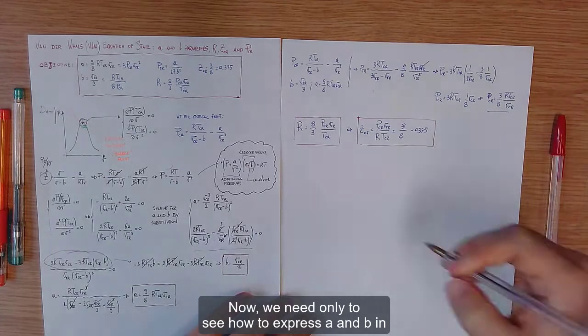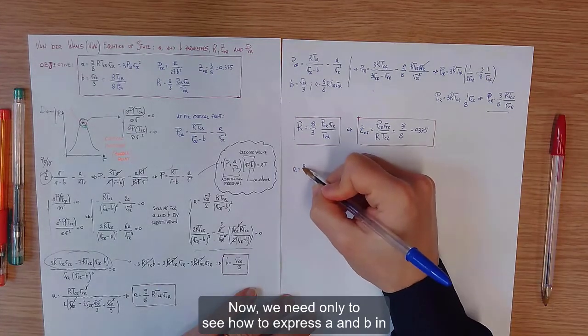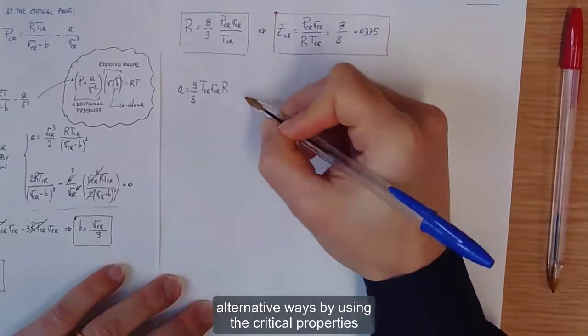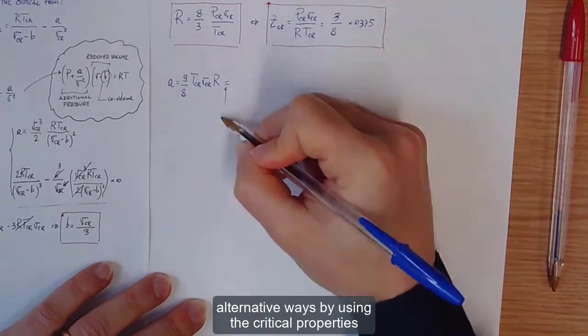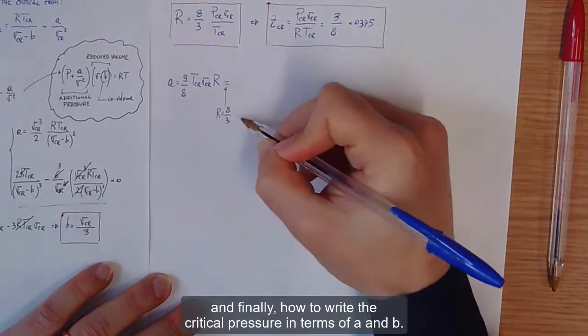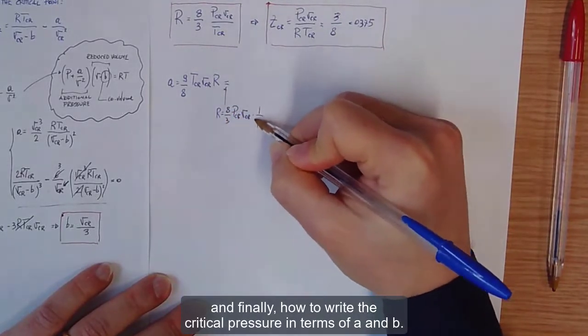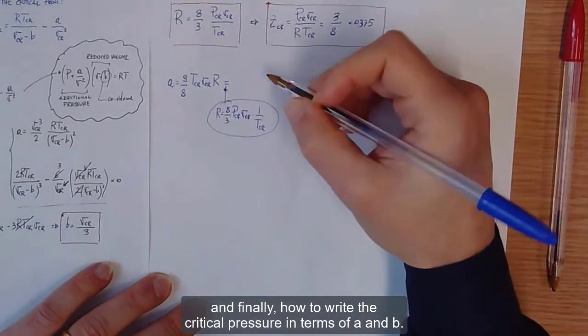Now we need only to see how to express a and b in alternative ways by using the critical properties. And finally, how to write the critical pressure in terms of a and b.